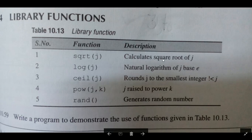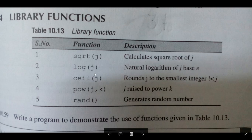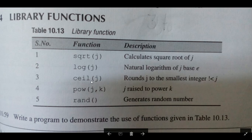So sqrt is useful for calculating the square root of a number J — that is the number I will provide as the argument. Log is the natural logarithm of J to base e. Ceil rounds the value up — for example, 5.2 becomes 6, and 4.7 becomes 5.